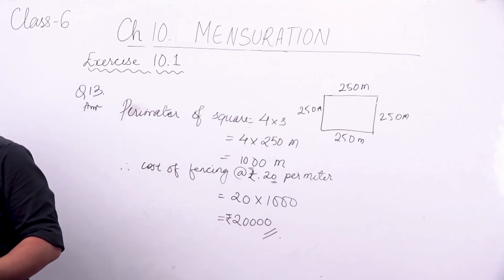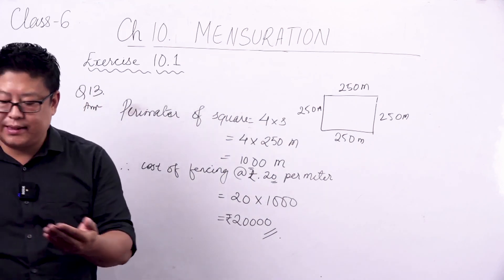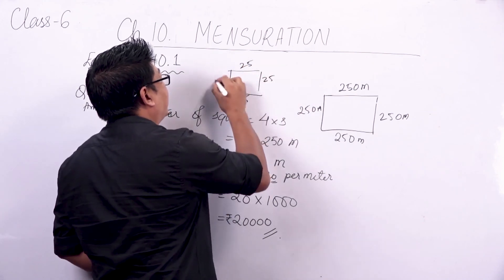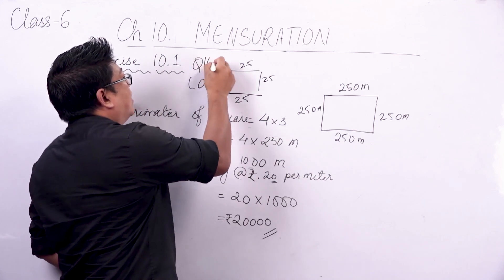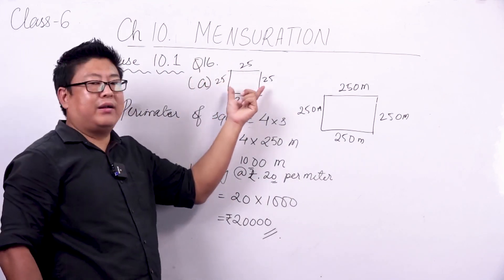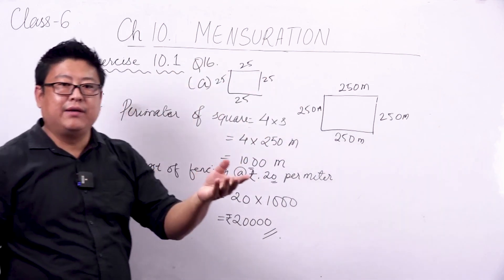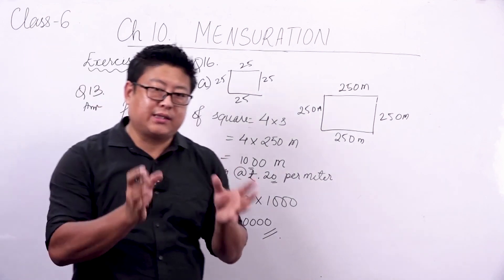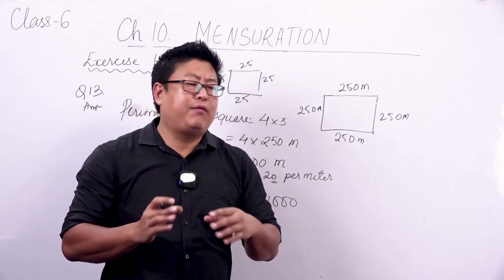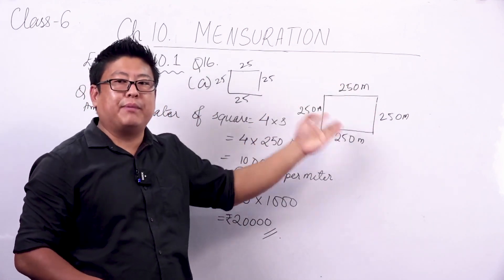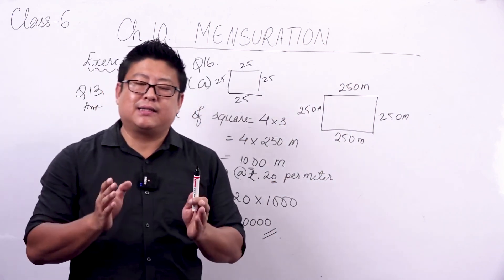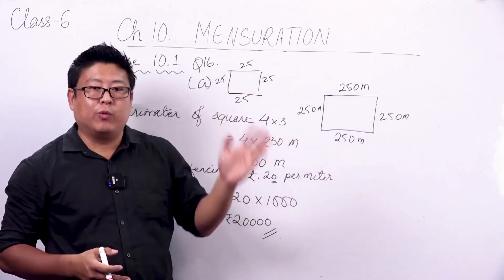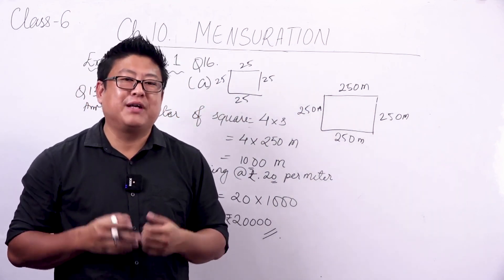The rest of the questions in this exercise are almost the same. For question 16, if a square is given use the square formula, if a rectangle is given use the rectangle formula, and if a triangle has all different sides simply add all the sides. If you forget the formula, you can directly add all the sides to get the perimeter. So with that, we come to the end of perimeter exercise 10.1. I'll see you again soon in the next class — please stay safe and take care. Bye-bye.